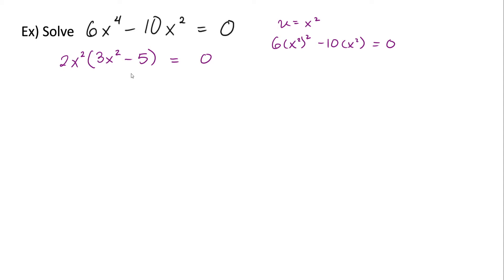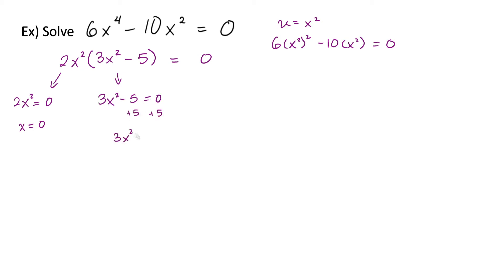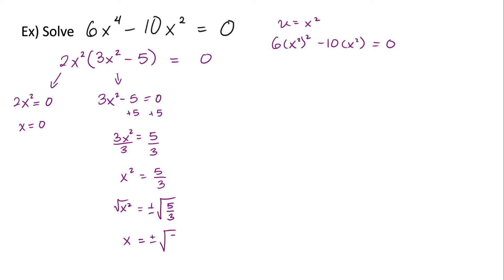We can't factor this any further, so we begin solving for x. From the first factor, we set two x squared equal to zero, which tells us x equals zero. From the second factor, three x squared minus five equals zero, so x squared equals five-thirds. At this point, we solve using the square root property — taking the square root of both sides and remembering to include the plus or minus. So x equals positive and negative square root of five-thirds.